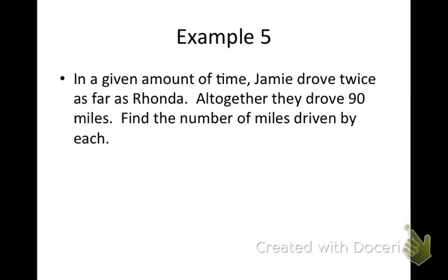Here we go. In a given amount of time, Jamie drove twice as far as Rhonda. Altogether they drove 90 miles. Find the number of miles driven by each. So here's one of those examples that it doesn't really matter what we identify as the original variable because in the end, we're going to have to find both Jamie's distance and Rhonda's distance. So we want to look at the two girls and see what we can find. Jamie drove twice as far as Rhonda. So I personally think that it's going to be easier if we identify the variable. And this time I'll just go ahead and use r. And we'll call that Rhonda, that's her distance. So that when we want to know Jamie's distance, we can put it in the terms right here stated that she drove twice as far as Rhonda. So that would be 2r, miles driven by Jamie.